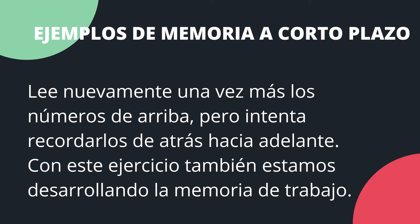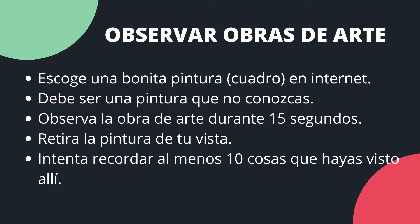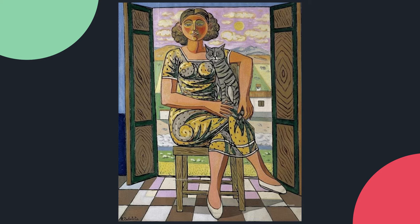Con este ejercicio también estamos desarrollando la memoria de trabajo. Otro ejemplo sería al observar una obra de arte: escogemos un cuadro que nos guste, de internet por ejemplo, un cuadro que no hayamos visto nunca, lo observamos durante 15 segundos. Una vez que la hayamos observado, tenemos que recordar al menos 10 cosas que hayamos visto en la imagen.